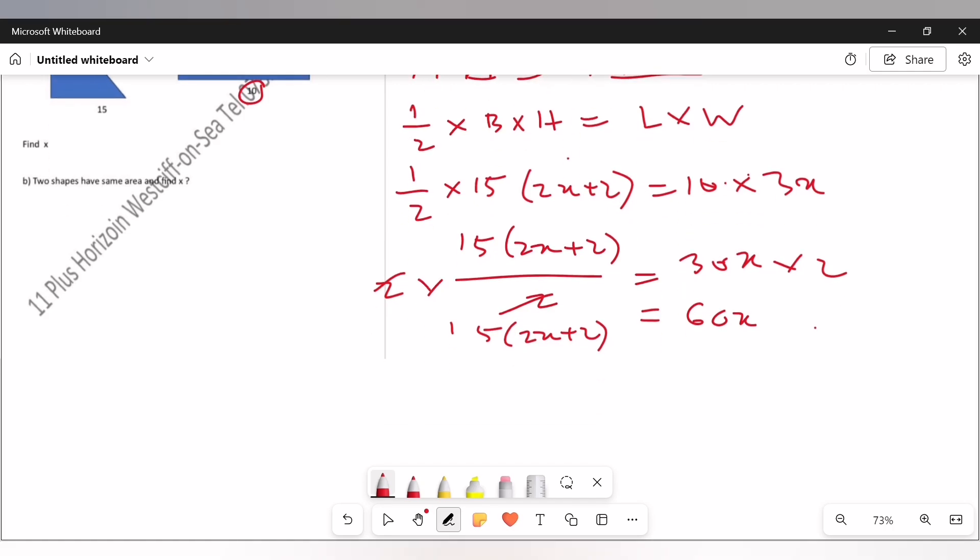Simplifying: 15 times 2x is 30x, plus 15 times 2 is 30, equal to 60x. Now we're going to cancel this 30x by subtracting both sides. And now look at this, you get 30 equals 30x.